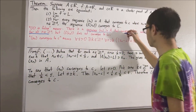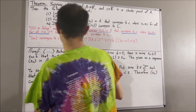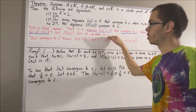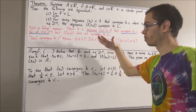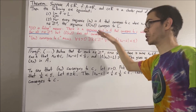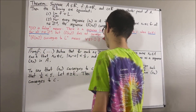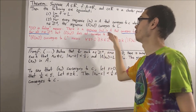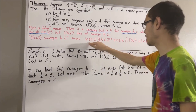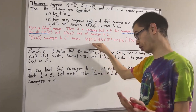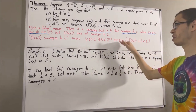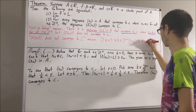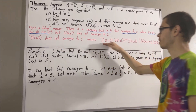That proves Xn converges to C. All that's left is to show that F of Xn does not converge to L. The negation of convergence to L means: there exists an epsilon greater than zero such that for all positive integers K, there exists a positive integer N greater than or equal to K such that the absolute value of F of Xn minus L is greater than or equal to epsilon. Our claim is that epsilon naught makes this statement true.